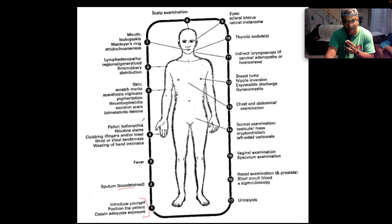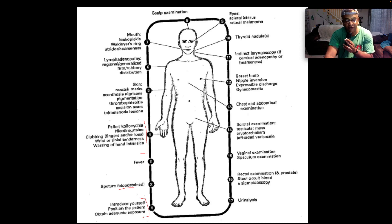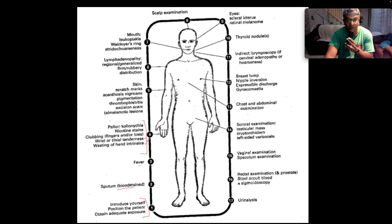Then we attack the hands. Note for palmar pallor, koilonychia — which is spoon-shaped nails — nicotine staining, clubbing. There are four different grades of clubbing of the fingers and/or toes. Is there wrist or tibial tenderness, which speaks for hypertrophic pulmonary osteoarthropathy? Look for wasting of the intrinsic muscles of the hand, which speaks to infiltration of the brachial plexus, notably C8, T1, and T2 nerve roots, by what could be a superior sulcus tumor.